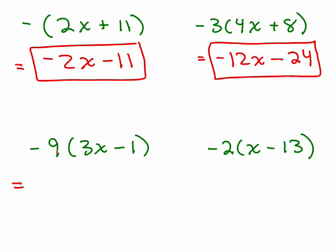Next one, negative 9 times 3X will be a negative 27X. And what do I have here? I've got a negative 9 times a negative 1. That'll be a plus 9.